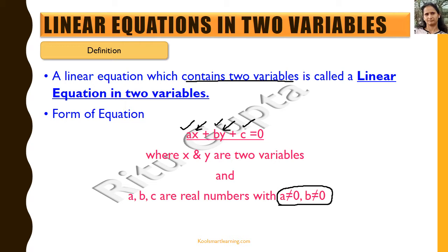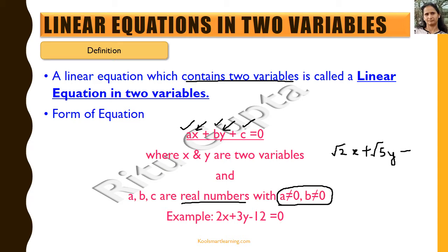The coefficients a and b can be irrational as well, so we always say they are real numbers. An example is 2x plus 3y minus 12 equals zero. If we take irrational coefficients, we could also write something like root 2 times x plus root 5 times y plus 4 equals zero. The constant term c is also a real number, but it could be zero — so it may be missing in some cases and the equation would still be a linear equation in two variables.